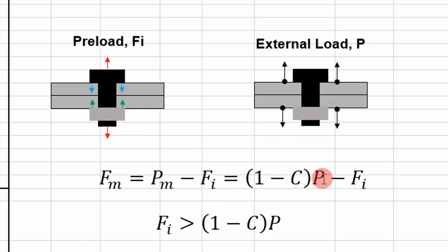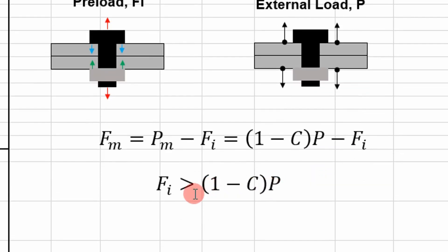And if you recall, based on the stiffnesses, the preload transferred to the members is going to be one minus this constant C times the external load P. And we need to make sure that basically the preload is greater than the external load transferred to the members. That's all we're really evaluating in this case.